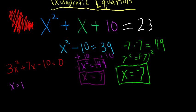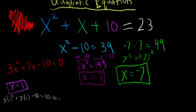That's not too hard to see, because when we plug x equals 1 into our equation, we're going to have 3 times 1 squared plus 7 times 1 minus 10. 1 squared is just 1, so 3 times 1 is 3, plus 7 times 1 is 7, 3 plus 7 is 10, and 10 minus 10 is 0. So x equals 1 works. But notice that if we used x equals negative 1, that doesn't work.